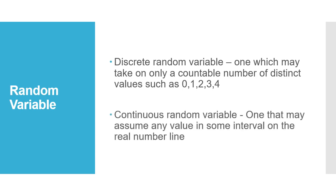Next, we have continuous random variable. Continuous random variable is one that may assume any value in some interval on the real number line. Unlike discrete random variable that only takes whole numbers, continuous random variable may take any number on the interval, so it could have decimals. The outcome that you expect may have a decimal in it.